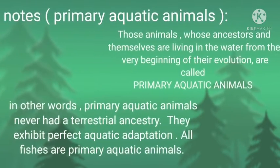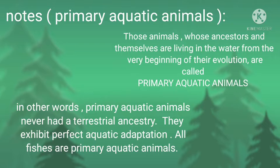Notes on primary aquatic animals: those animals whose ancestors and themselves have been living in water from the very beginning of evolution are called primary aquatic animals. In other words, primary aquatic animals never had a terrestrial ancestry. They exhibit perfect aquatic adaptation. All fishes are primary aquatic animals.